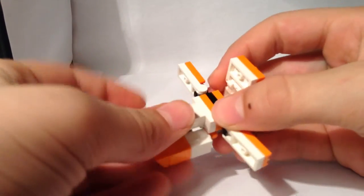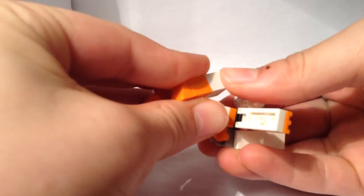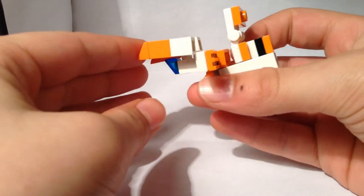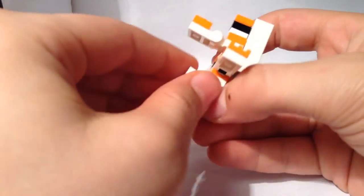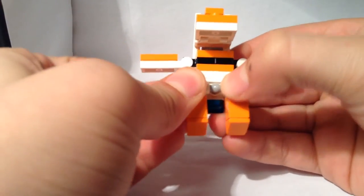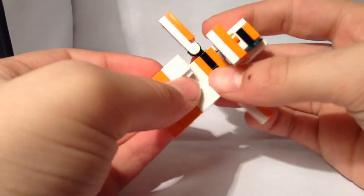Next, you're going to rotate this entire section up, like so. And just kind of wiggle these bits out to the side, so that there's a little bit of clearance for them to move.